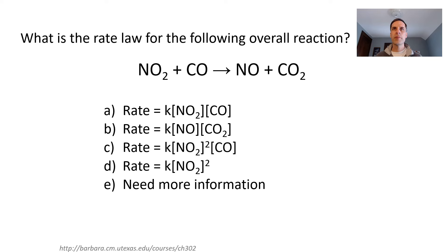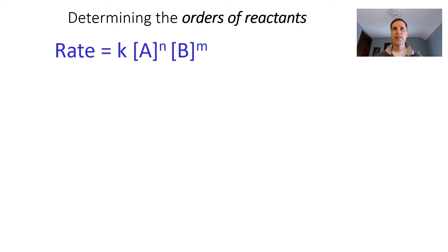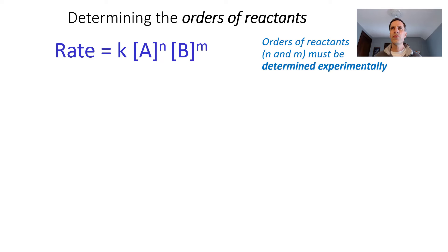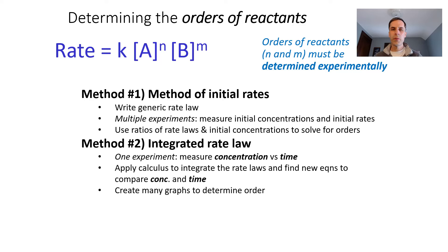It turns out we need more information to determine that rate law. Rate laws have to be determined experimentally. We've talked about a couple of ways to do this: the initial rates method, where we run a bunch of experiments and compare how fast reactions start, and the integrated rate laws method, where we do a single experiment, measure concentration over time, and use different graphs to see which order fits best.